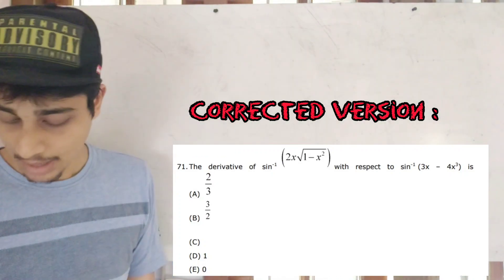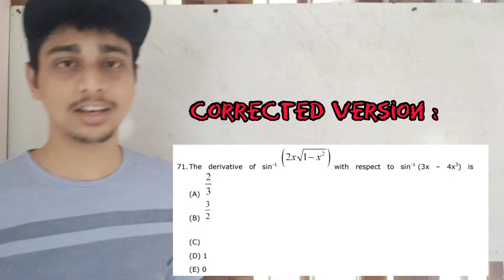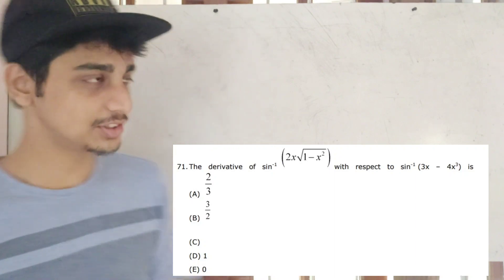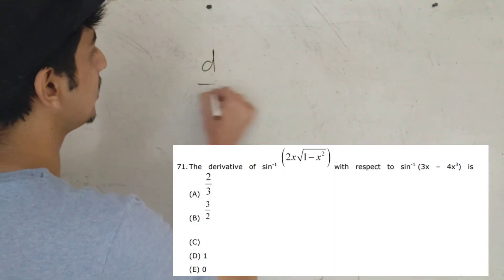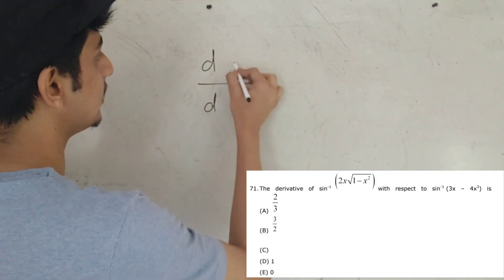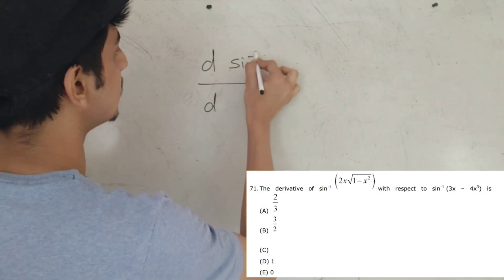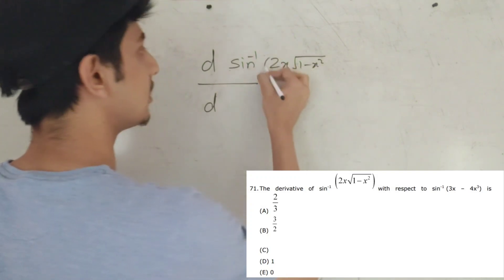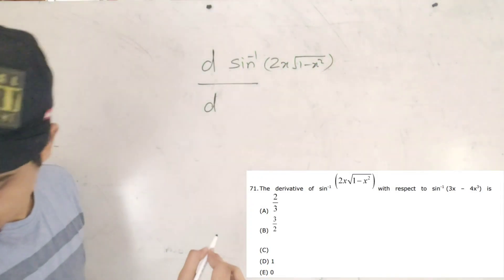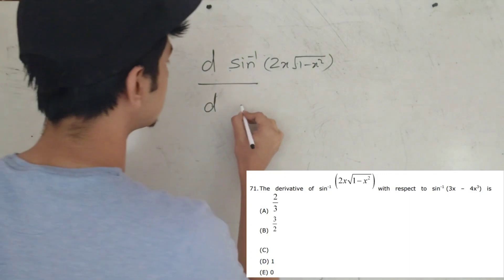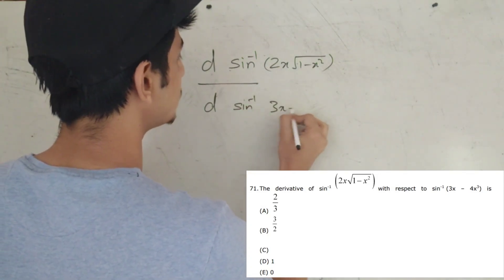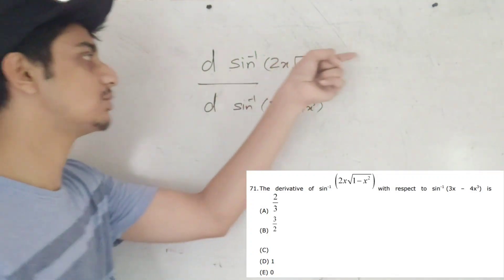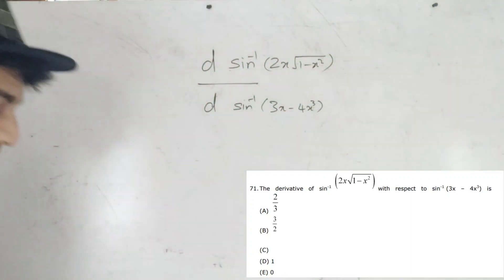That is: 2x root 1 minus x square — I will add a sin inverse. This is the question: d by d of sin inverse 2x root 1 minus x square divided by sin inverse 3x minus 4x cube.